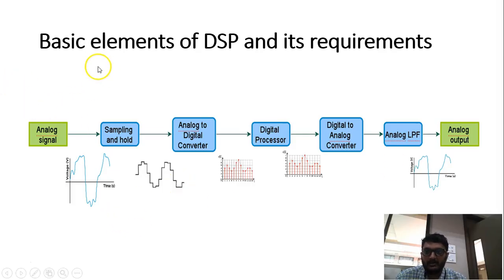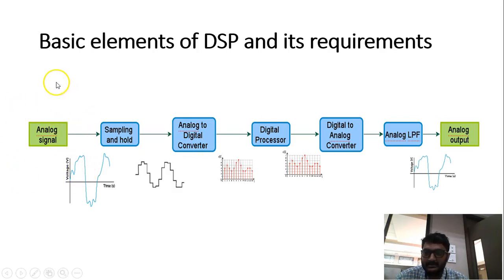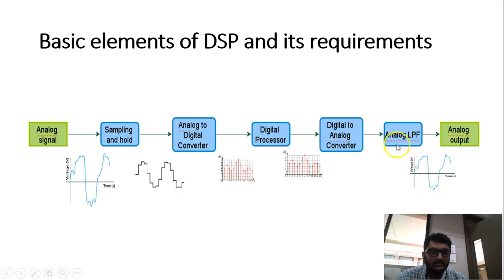So this is our block diagram of DSP. We give the analog signal to the sample-and-hold block, then convert it to a digital signal using the ADC. At the output of the sample-and-hold, there is a discrete time signal, which we code according to the quantization level, and after this we get a digital signal. That digital signal we process in the digital processor. The output of the digital processor is again converted into an analog signal using a digital-to-analog converter. To remove the high frequency components, we use the analog low-pass filter, and then we get a very smooth analog output. That is the basic element of DSP.